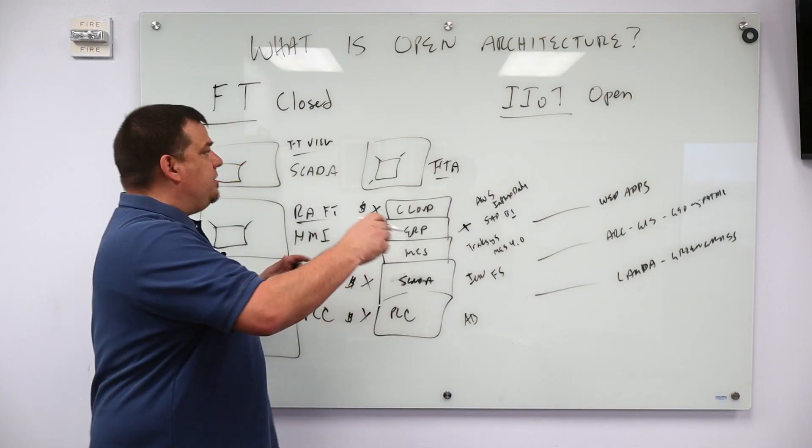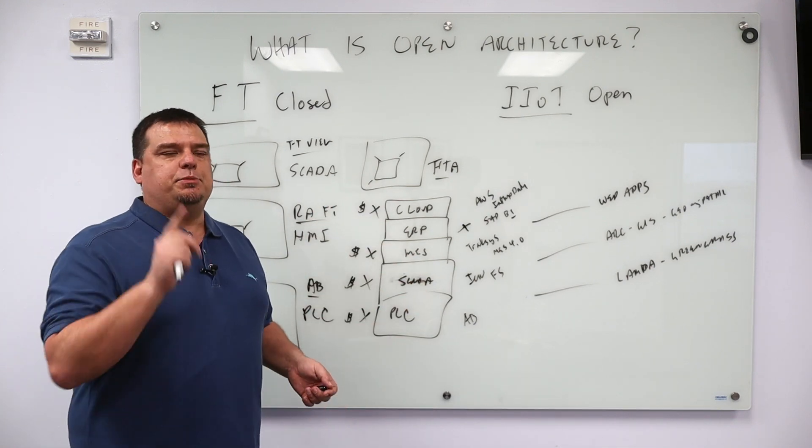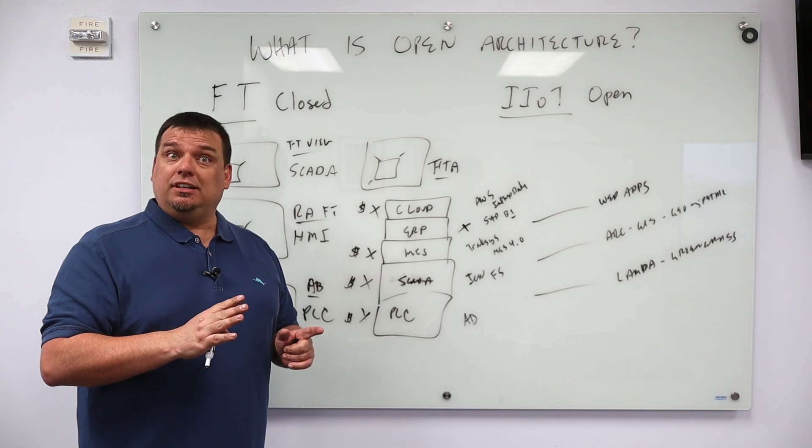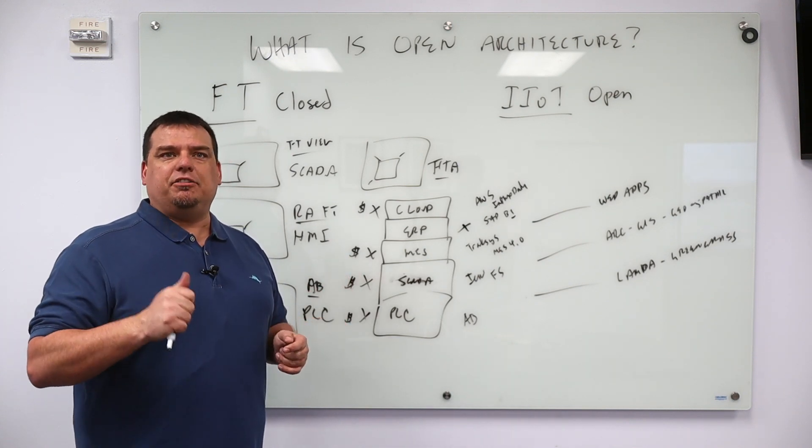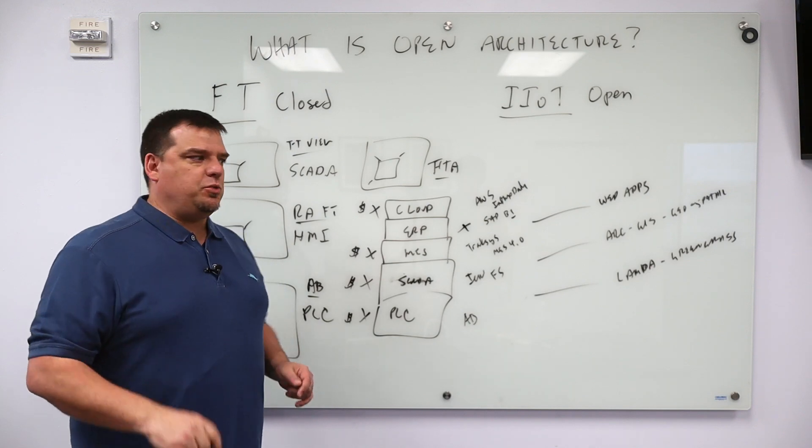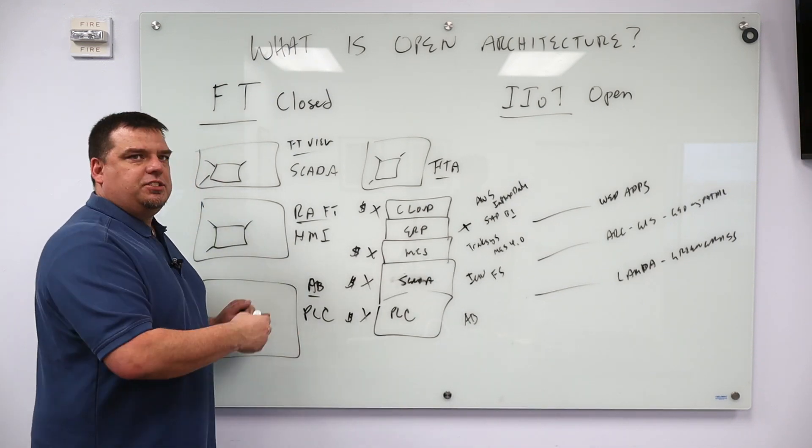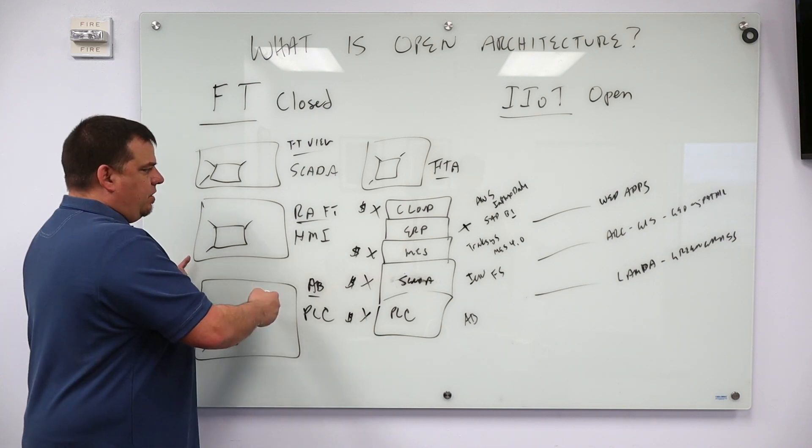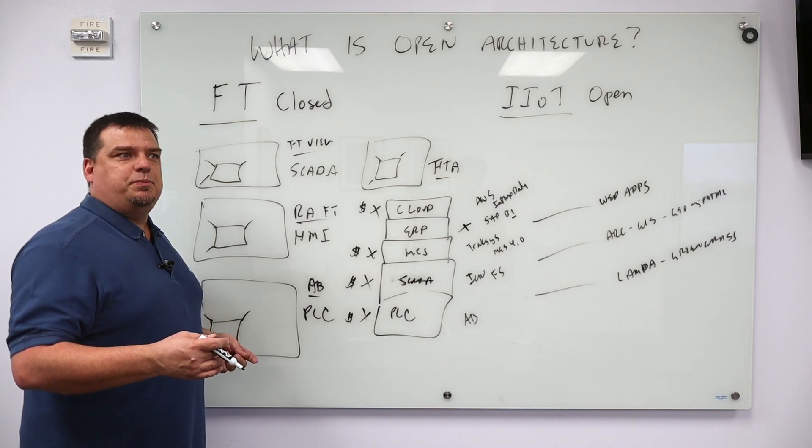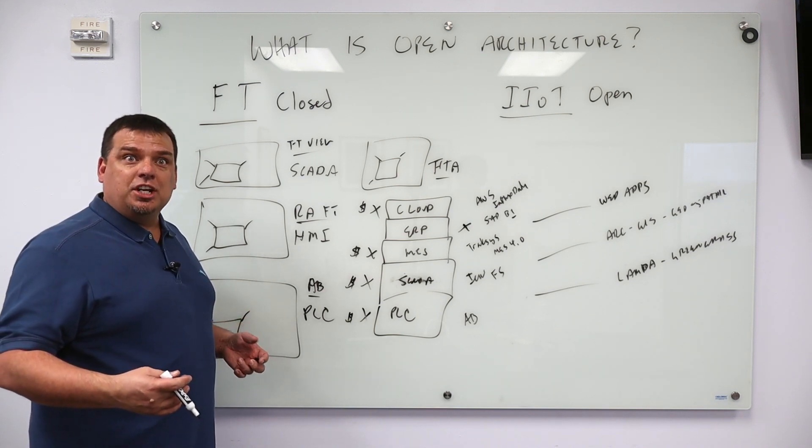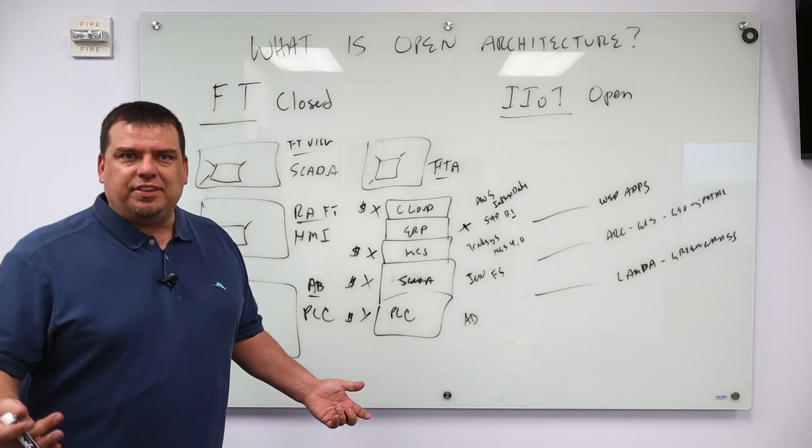The reason that you wanted proprietary protocols in the old days was because the network infrastructure was so minimal, you needed to have highly efficient communications between your PLCs and your HMIs. That's part of the reason that Siemens and Rockwell made the way that their HMIs and their PLCs talk to one another a proprietary language, because they wanted it to be very efficient because of the limited bandwidth you had on the networks. We have unlimited bandwidth today.